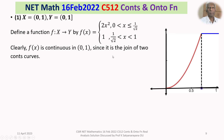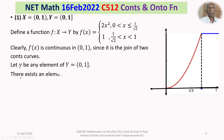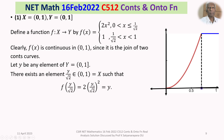Now let us show that f is onto. Let y be any element of Y = (0,1]. Then there exists an element y/√2 in the open interval (0,1), which is X, such that f(y/√2) = 2·(y/√2)² = 2·y²/2 = y. This works even when y = 1.